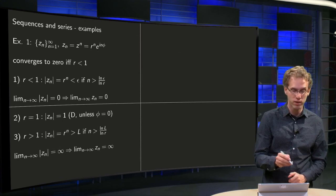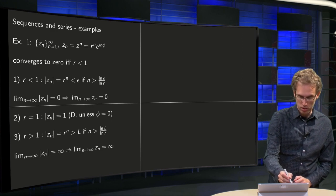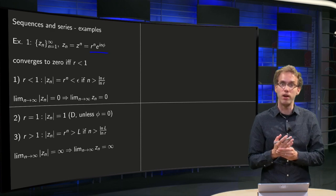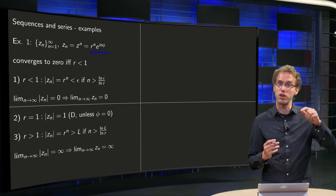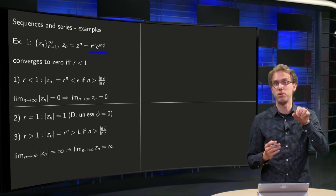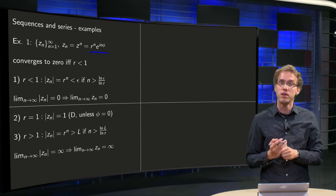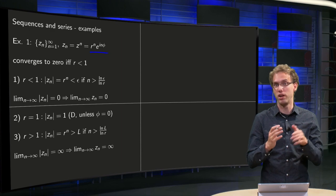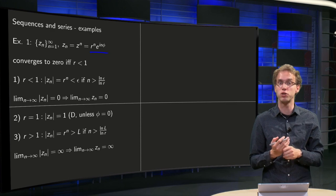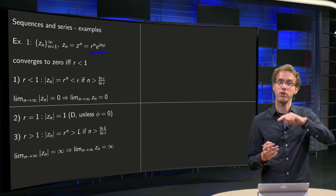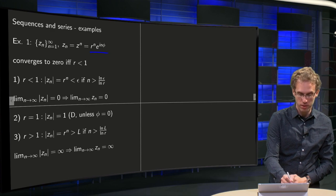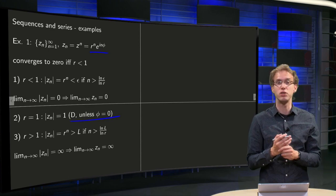What happens in the case r equals 1? If r equals 1, the norm of z_n equals 1 all the time, so the elements of the sequence go around the unit circle, because you have e to the power i·n·φ. Unless φ equals 0 — then the sequence consists only of 1 all the time and converges to 1. Otherwise, if φ is not equal to 0, you go around the unit circle without settling on one particular value, so the sequence is divergent, though not converging to 0.